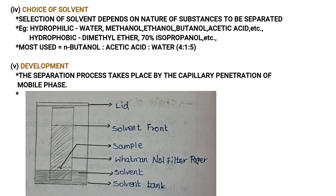Here is a diagram. There is a solvent tank, and the paper is placed in it with a 2 cm gap at the bottom where we add the sample spot.